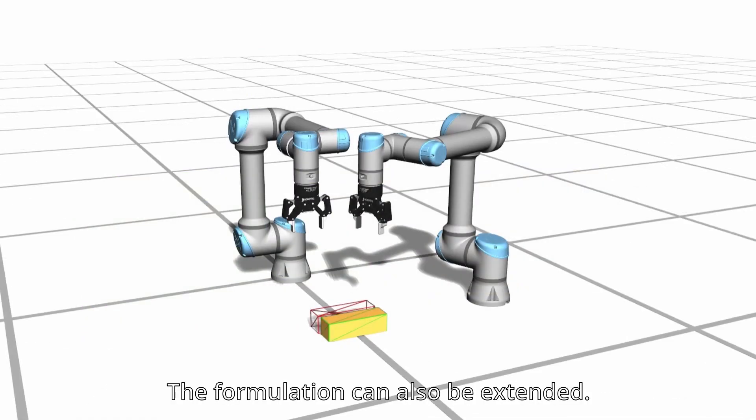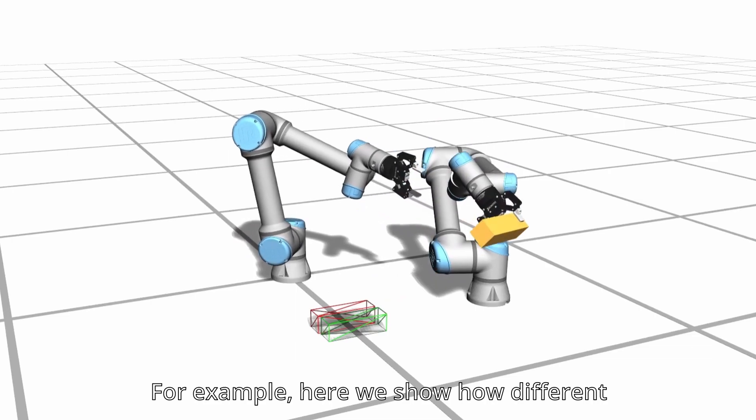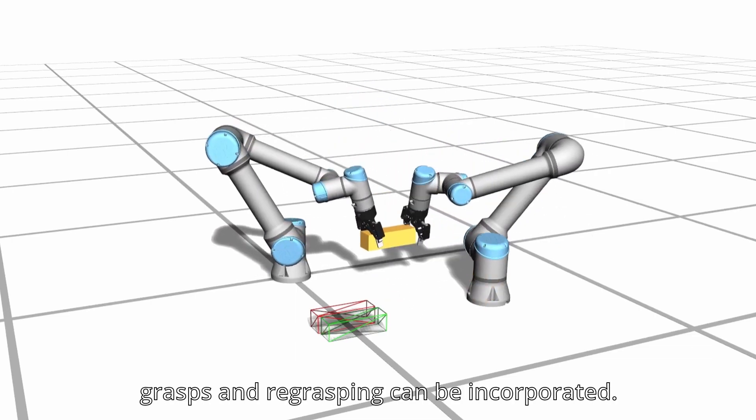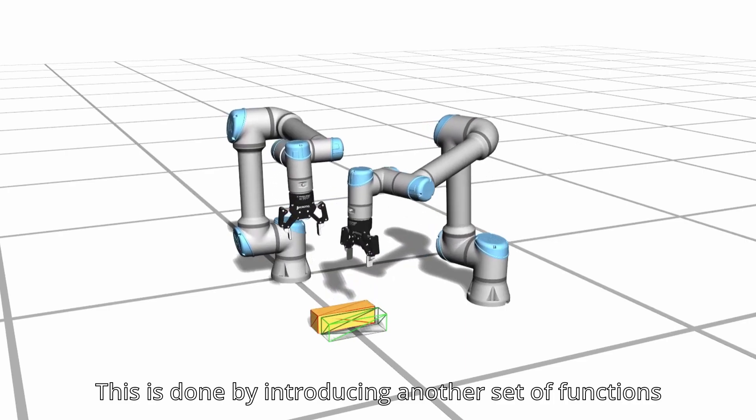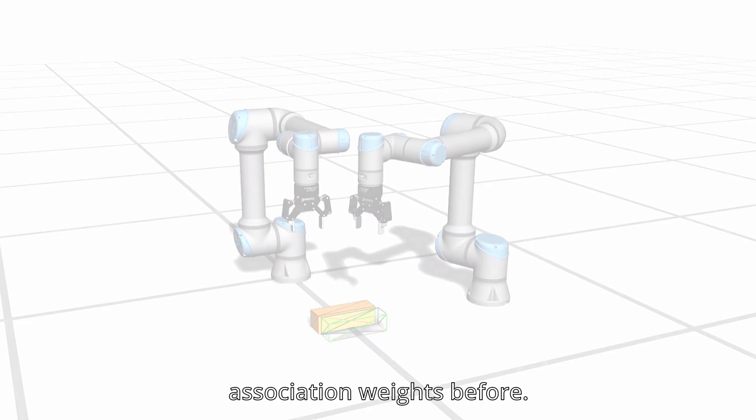The formulation can also be extended. For example, here we show how different grasps and re-grasping can be incorporated. This is done by introducing another set of functions that associate a particular end effector to a specific orientation in a similar way as the association weights before.